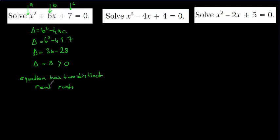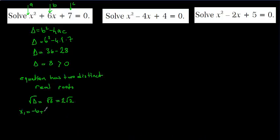With delta equal to 8, the square root of delta equals root of 8, which simplifies to 2 root 2 because 8 is 4 times 2 and root 4 equals 2. Then x1 equals minus b plus root of delta over 2a, which is minus 6 plus 2 root 2 over 2. And x2 equals minus b minus root of delta over 2a, which is minus 6 minus 2 root 2 over 2. So when delta is greater than 0, we have two different roots.